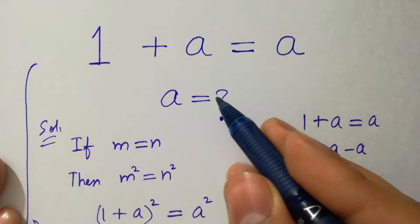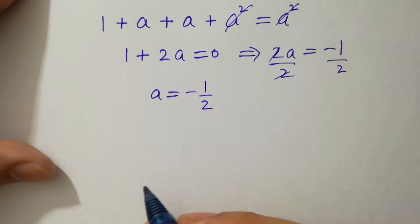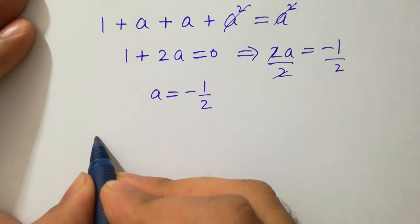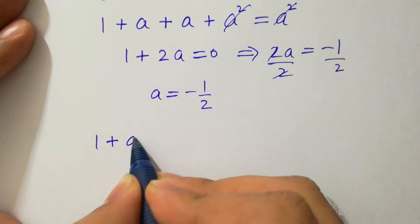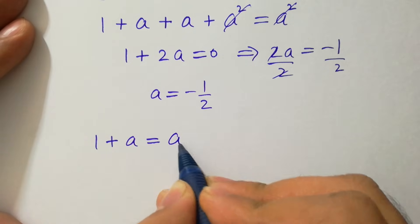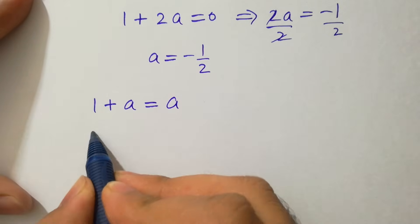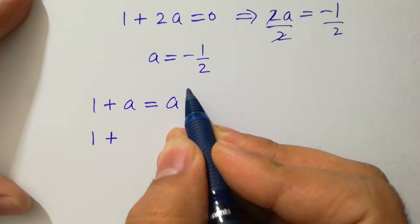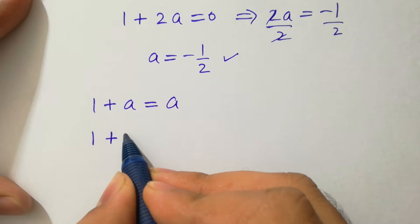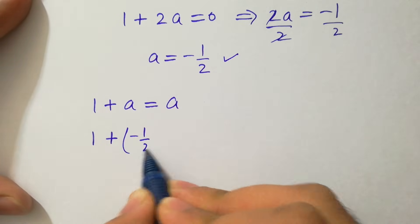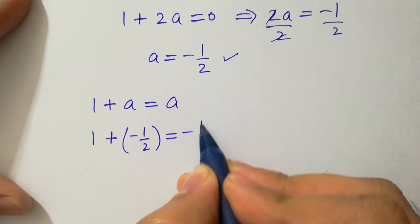Put it into the equation 1 + a = a. We have 1 as it is, plus a is -1/2, equals -1/2.